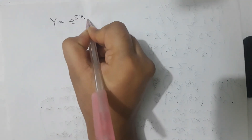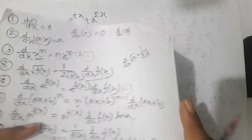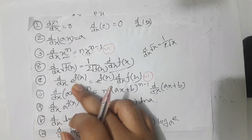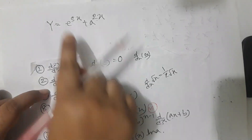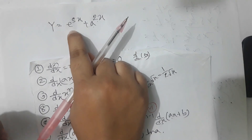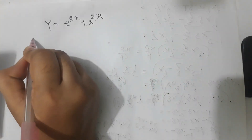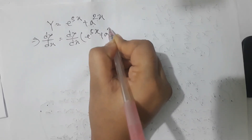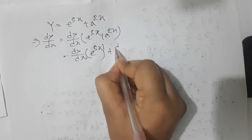e to the power 5x plus a to the power 2x, e to the power 5x plus a to the power 2x. We have e to the power 5x plus e to the power 2x. Find dy/dx — differentiate this expression.